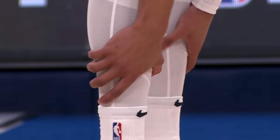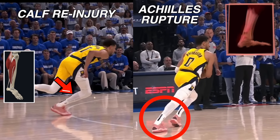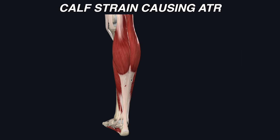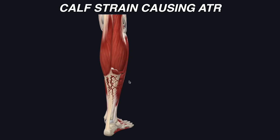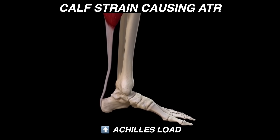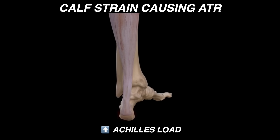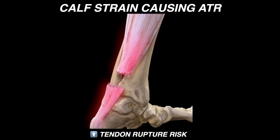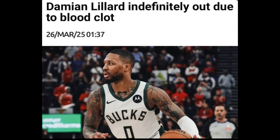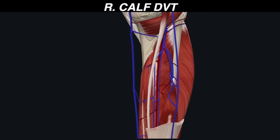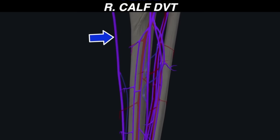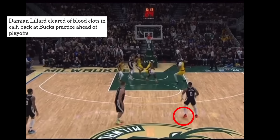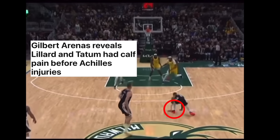Halliburton's calf strain likely stemmed from this load, and playing through it in the Finals made an Achilles rupture far more likely. If you already have a tear in that region, the strain compromises muscular protection and coordination of the Achilles complex, leading to excess tensile load on the Achilles, poor shock absorption, and asynchronous firing. This is why one sudden forceful movement can overwhelm the compromised tendon, causing it to completely snap and rupture. In Dame's case, he had a DVT-related absence during which he couldn't play contact sports. Though the blood clot occurred in the opposite leg, it did cause a period of immobilization. On return, he faced a sudden spike in intensity and minutes — an abrupt load increase that likely contributed to his rupture.